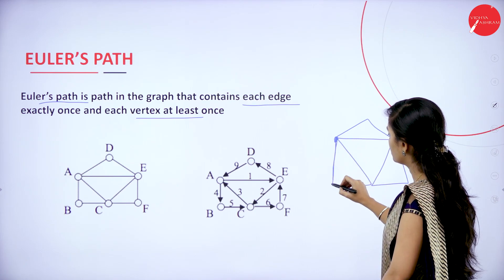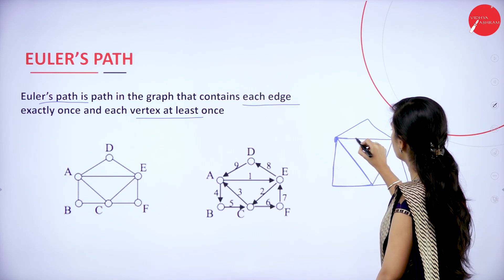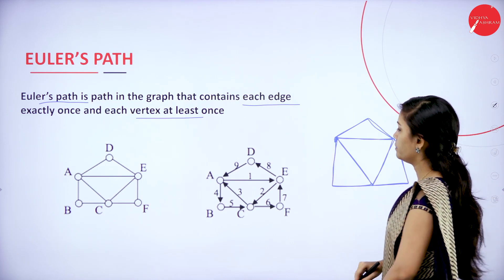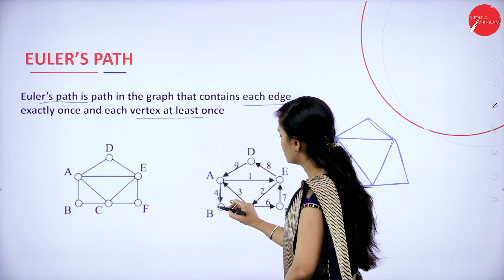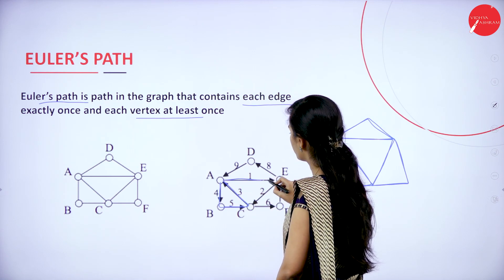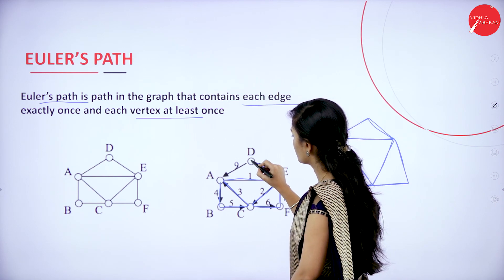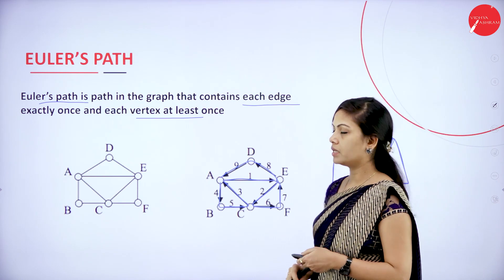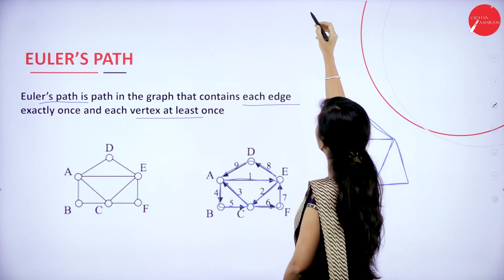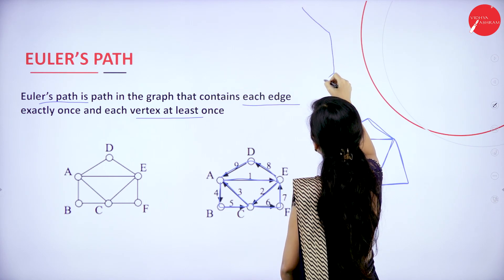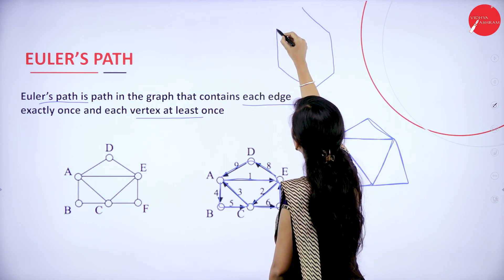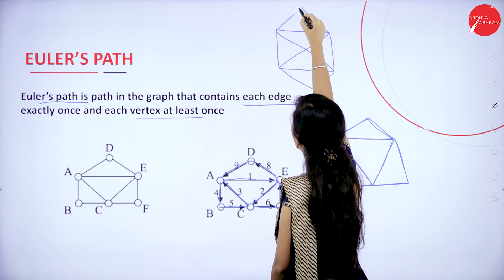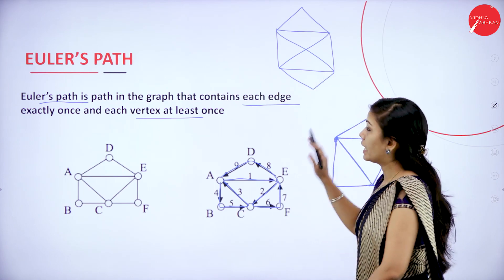I have started from this point and then reached the starting position. So this is an example for Euler's path — no edges have been retraced. I will draw one more Euler's path: V1, V2, V3, V4, V5, V6, V7, V8, V9, V10, V11. I have not retraced any path here.